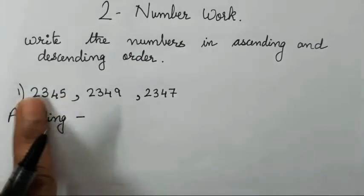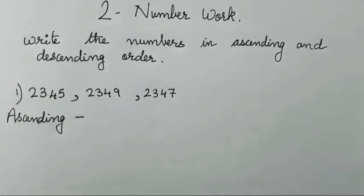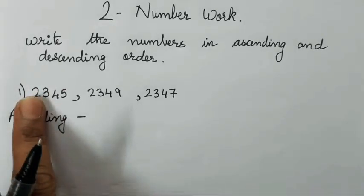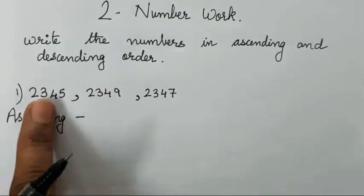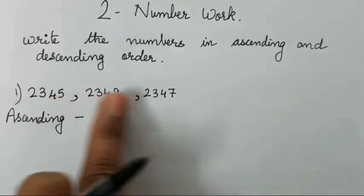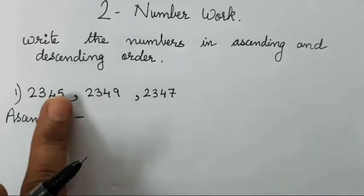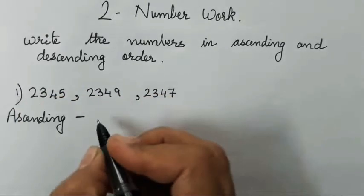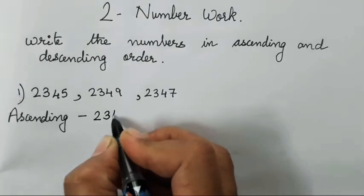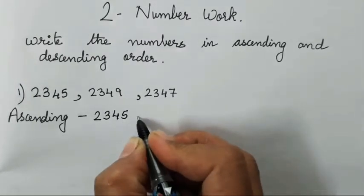So when all the numbers are same, you have to check one number at a time. First you see 2, 2, 2, then 3, 3, 3, then 4, 4, 4, then 5, 9 and 7. So which is smallest? 5. So therefore 2345 you have to write first.